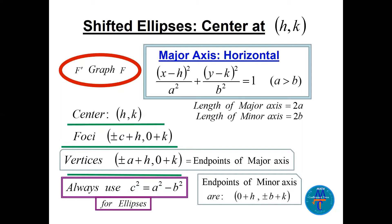Before we start, let me highlight the important rules used in ellipses. There are two slides before we start the questions. The first one is about horizontal ellipses that have a major axis horizontal. These are shifted ellipses — shifted means the center is not (0,0), it is (h, k). The equation is (x−h)²/a² + (y−k)²/b² = 1, where a > b. In ellipses, a is always the bigger number. The length of the major axis is 2a and the length of the minor axis is 2b.